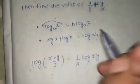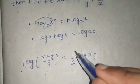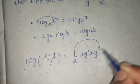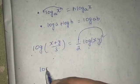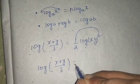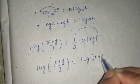Now again I will use the property I told you that if something is in front it can move to the power. So this half moves to the power of xy. So I will get log of (x+y)/3 being equal to log of (xy)^(1/2).